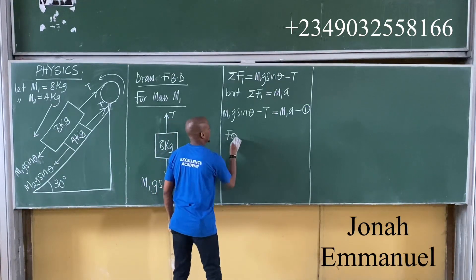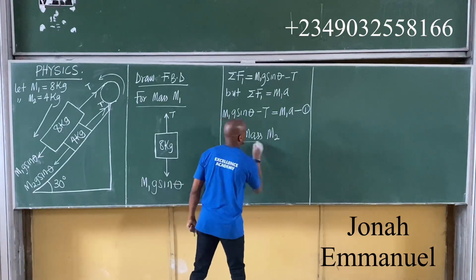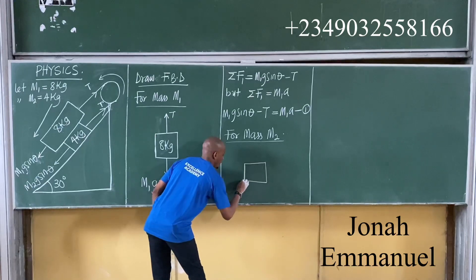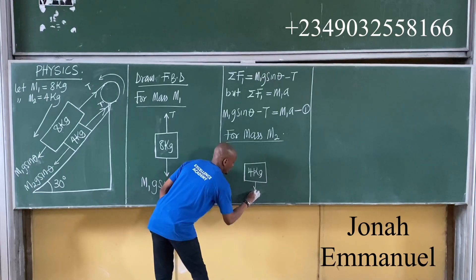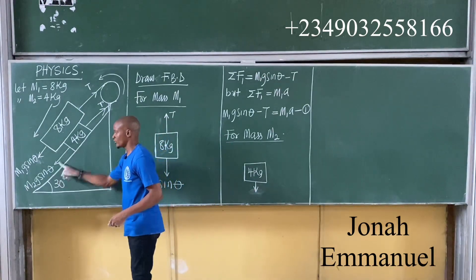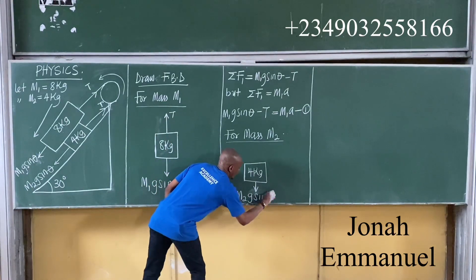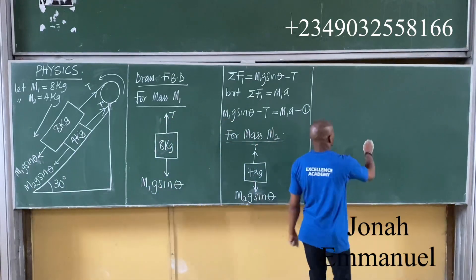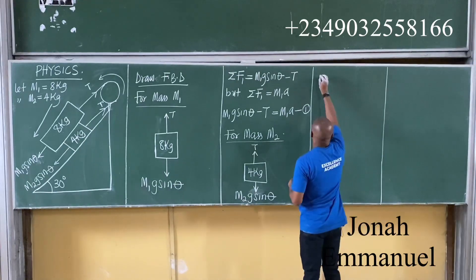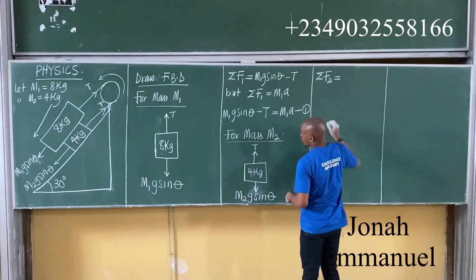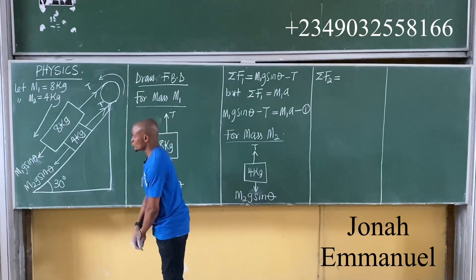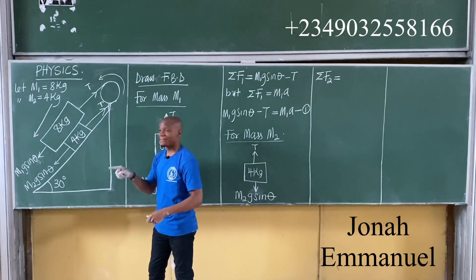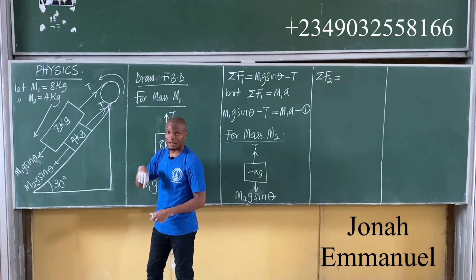For mass M2 — that's 4 kilograms — the force coming down the incline is M2G sinθ, and going up is T. Let's get the sum of forces. The sum of F2 equals... which is going in the supposed direction? Is it M2G sinθ or T? Careful — for mass 2, which is going in the supposed direction: T or M2G sinθ?